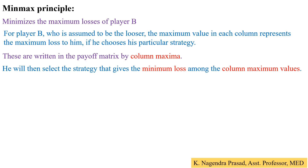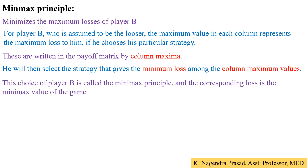In the minimax principle, from the column values we write down the maximum values, and among those maximum values we select the minimum value — that is why it is called the minimax principle. The choice of player B is called the minimax principle, and the corresponding loss is called the minimax value of the game.